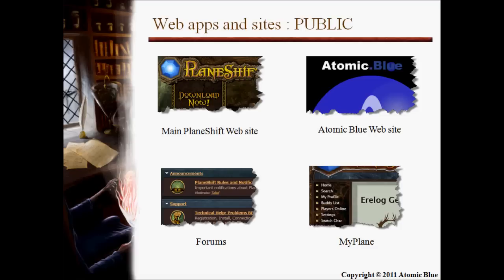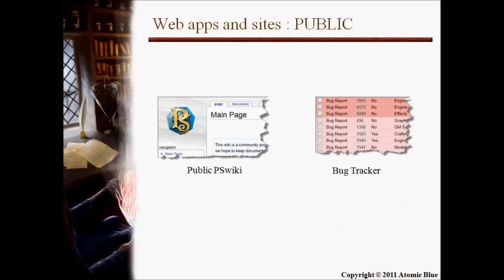In terms of web applications and sites, we have public and internal websites. For the public ones, we have the main PlaneShift website at PlaneShift.it, an Atomic Blue website — Atomic Blue is the non-profit corporation we created for PlaneShift to hold all the copyrights and assets. We have a forum application based on Simple Machines, and MyPlane, which is another website. So in total for the public, we are maintaining around six websites: those four plus the public wiki and the bug tracker.